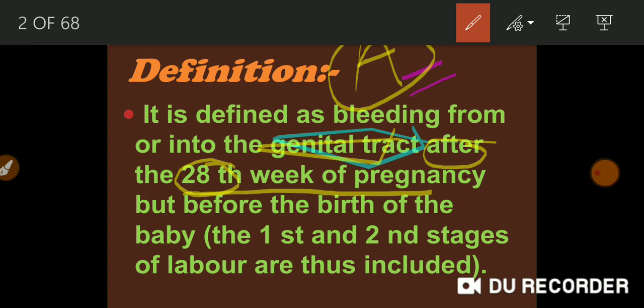If the woman is coming before 28 weeks of pregnancy with vaginal bleeding, there is a chance of abortion or any type of hydatidiform mole — it may be ectopic. So you should understand what is happening. Antepartum hemorrhage is after the 28 weeks of pregnancy — that is different from early pregnancy bleeding. After 28 weeks up to 9 months duration, that is called antepartum hemorrhage.